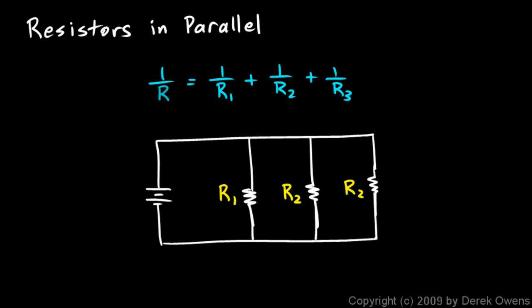The essential aspect is that the current that comes out of the battery divides into multiple branches. Some of the current goes through R1, some goes through R2, and some goes through R3, so those are in parallel.